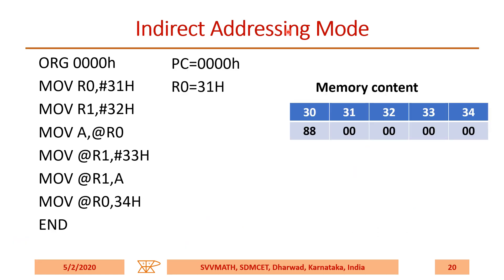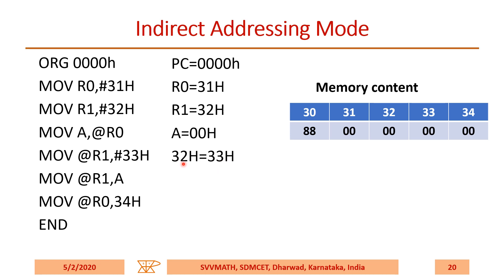Let us consider indirect addressing mode. These are the contents of the memory locations before execution starts. MOV R0, #31H — R0 becomes 31H. MOV R1, #32H — R1 becomes 32H. MOV A, @R0 — the content of A becomes the content of the memory location pointed by R0. R0 is 31H, and location 31H is 00H, so A becomes 00H. MOV @R1, #33H — 33H will be moved to the memory location pointed by R1, so location 32H will become 33H.